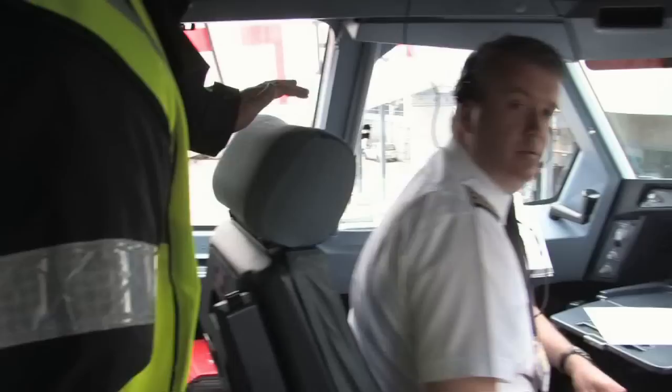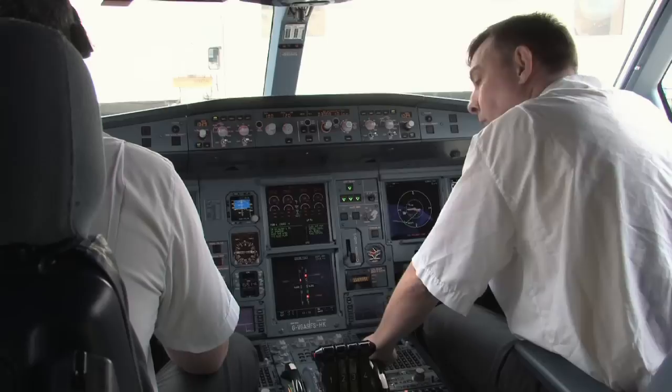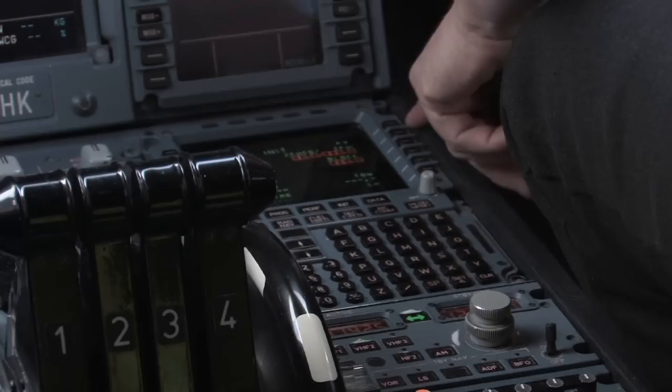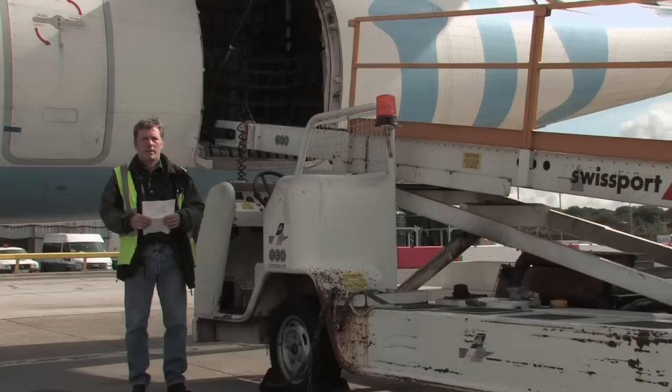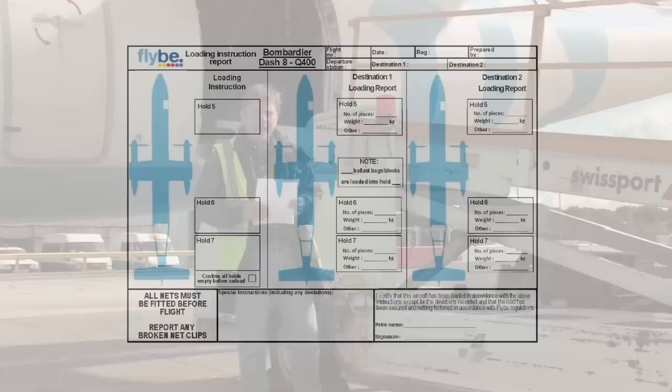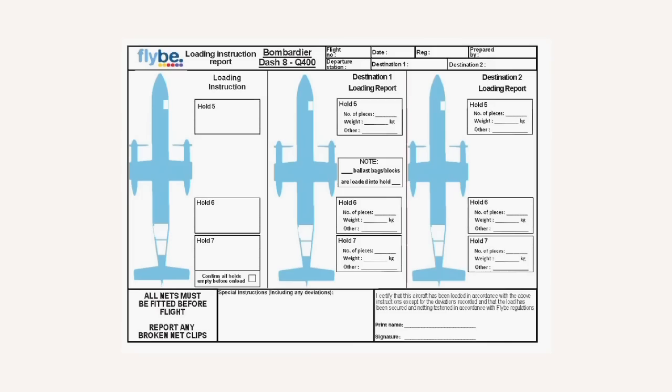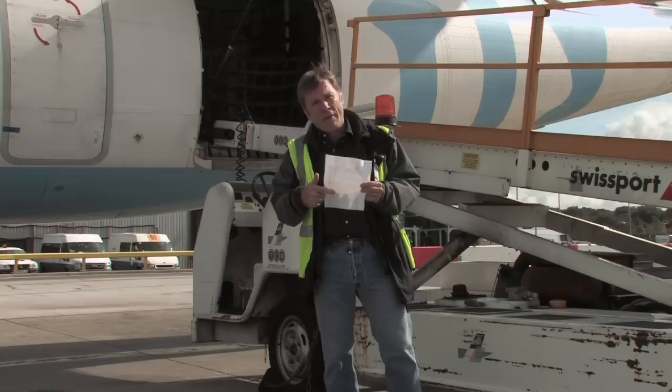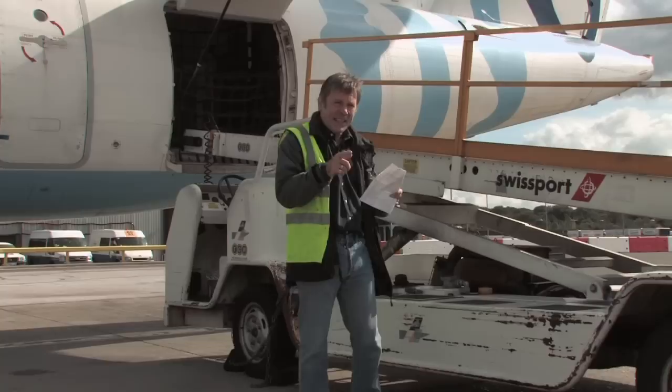In the flight deck, crews can also play their part. When you receive the load information, take time to read the figures. Don't just take it for granted that they are correct. Use all of the information available to you to ensure that a gross error has not been made. Whoever's responsible for the load control function will also provide one of these — a loading instruction report. And it's important that if you sign the certification block on this, you make sure that the aircraft is loaded in accordance with the instructions. And if there are any deviations, you record them on here.